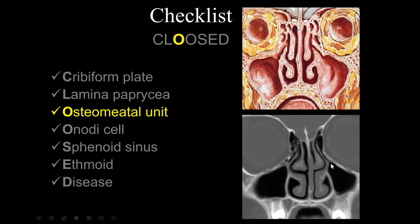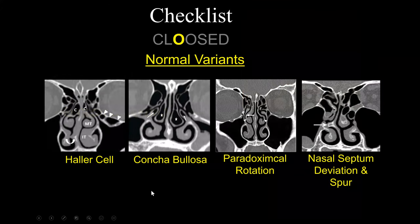On CT scan, we confirm the primary ostium, ethmoidal infundibulum, uncinate process, middle meatus, and middle turbinate. We must evaluate the osteomeatal unit closely and be aware of normal variants that could lead to narrowing of the ethmoidal infundibulum and result in mucosal thickening. This includes multiple Haller cells — infraorbital air cells that track along the primary ostium and ethmoidal infundibulum — and concha bullosa, where air is present within the middle turbinates.